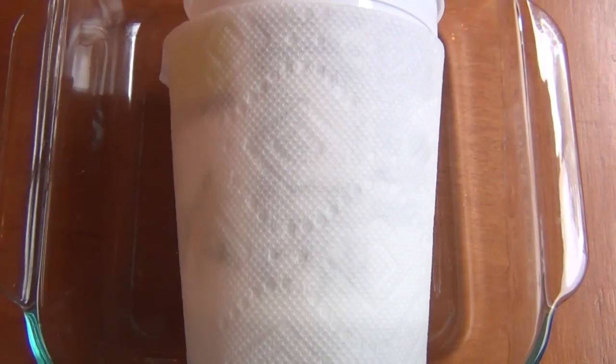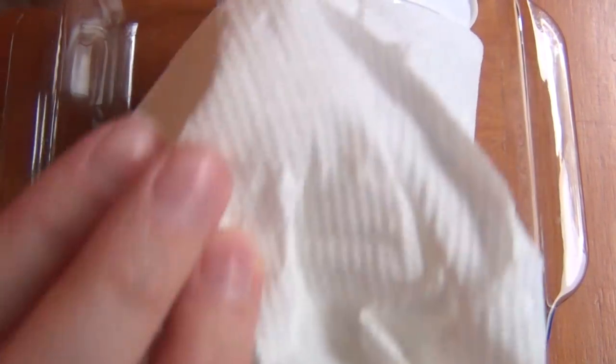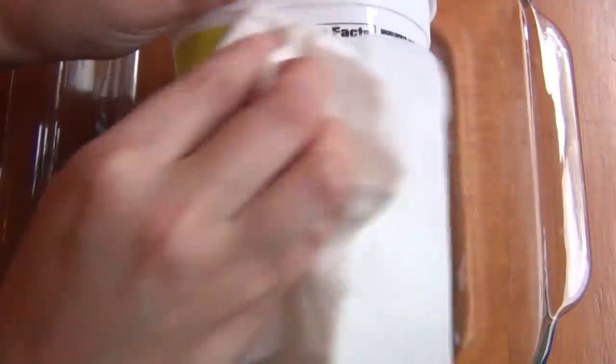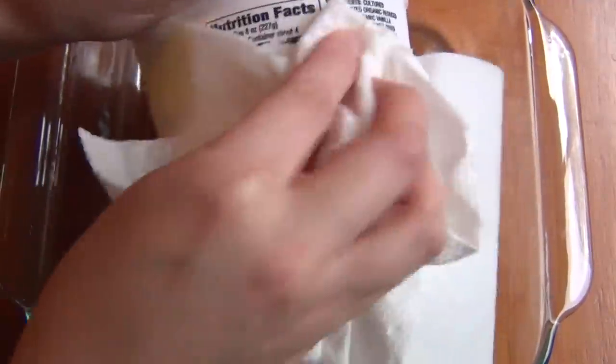Once your container has had a little bit of time to sit, grab another rag or paper towel and start rubbing the surface of the container to get all of that ink off.